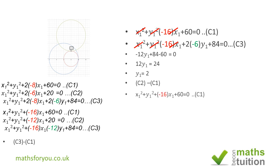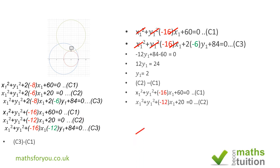Similarly, subtracting C1 from C2: the x² and y² terms cancel. We get −12x − (−16x) = 4x, and 20 − 60 = −40. So 4x₁ = 40, giving x₁ = 10. The common point P from which the tangents are drawn is therefore (10, 2).